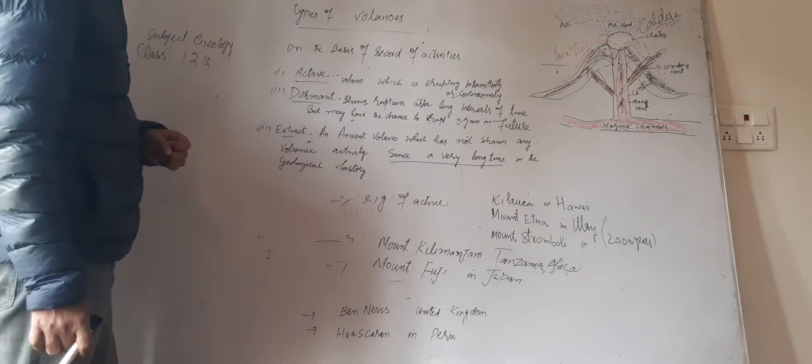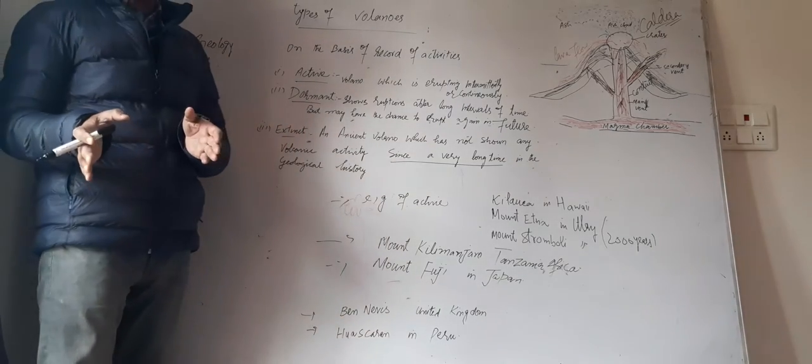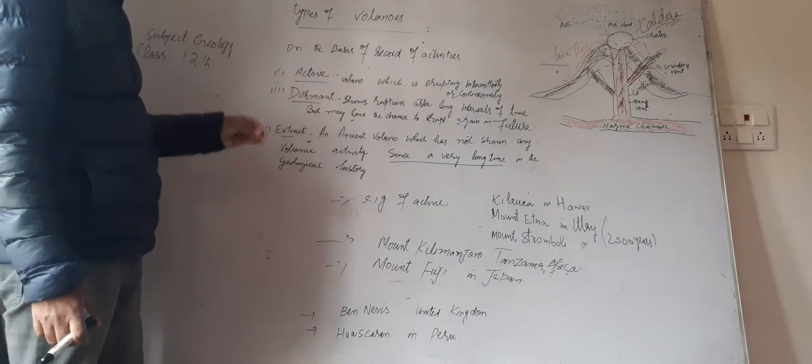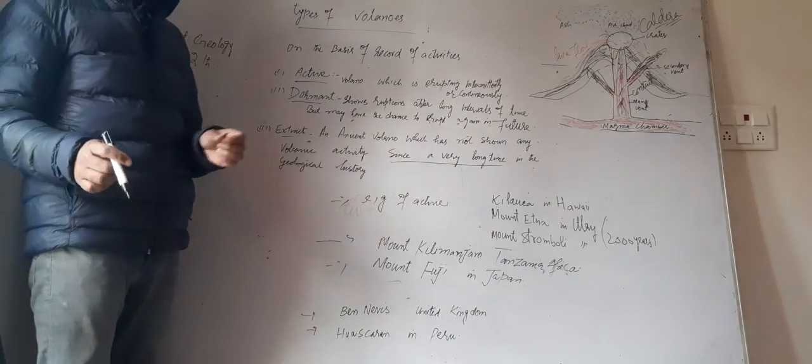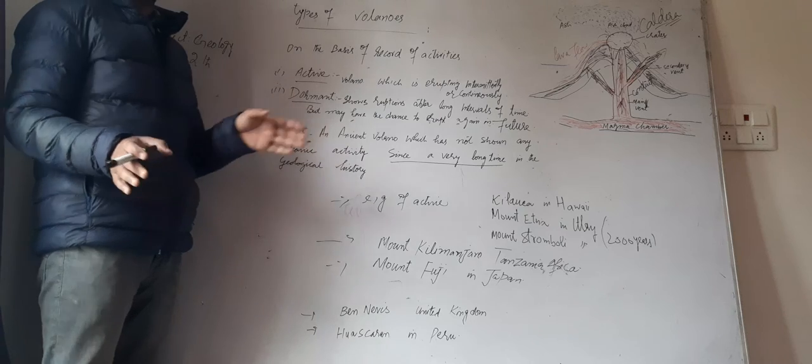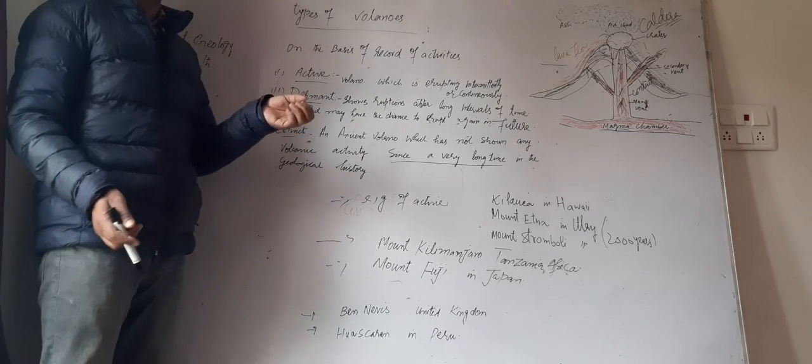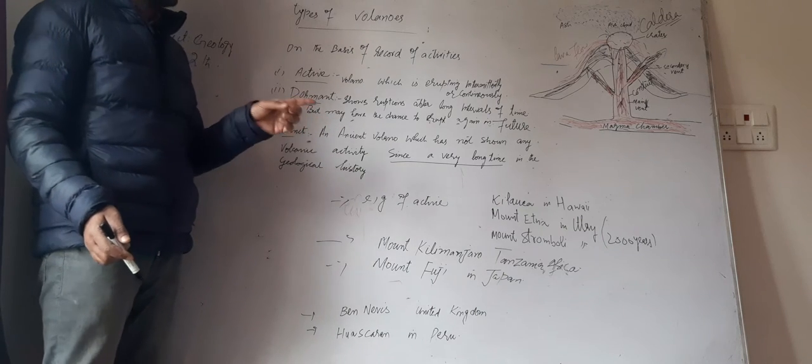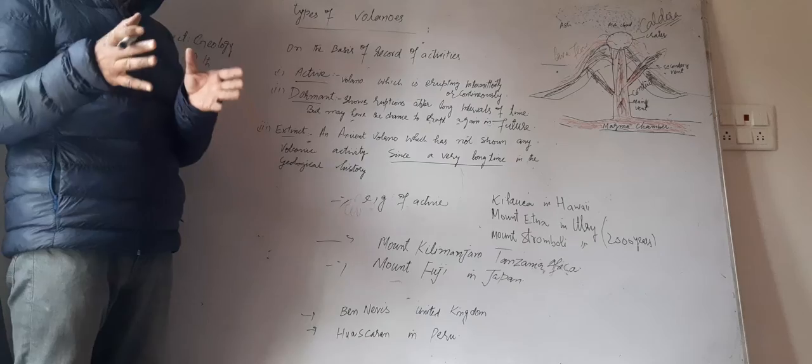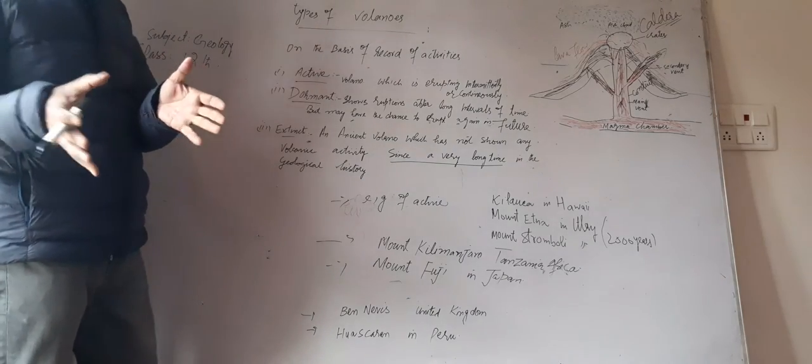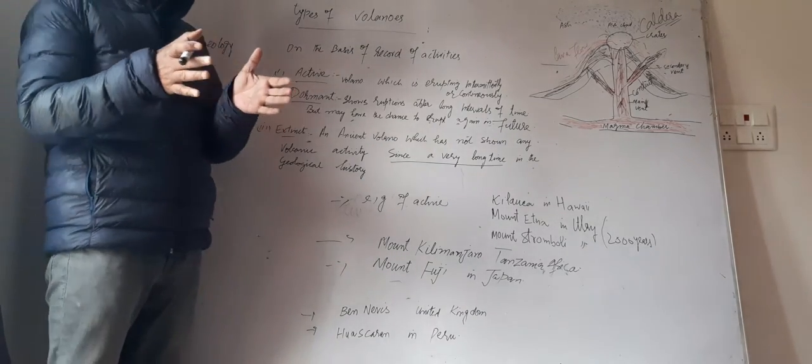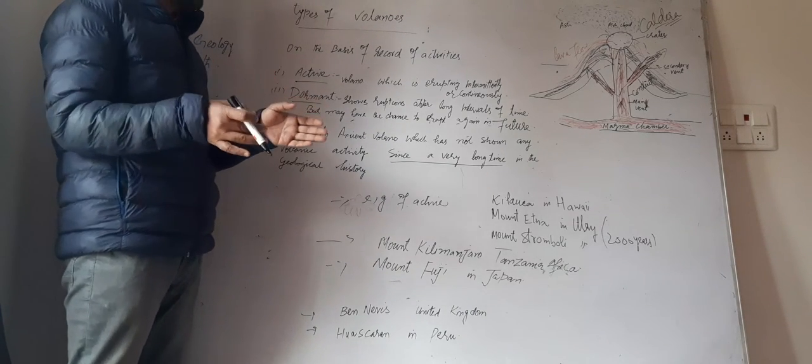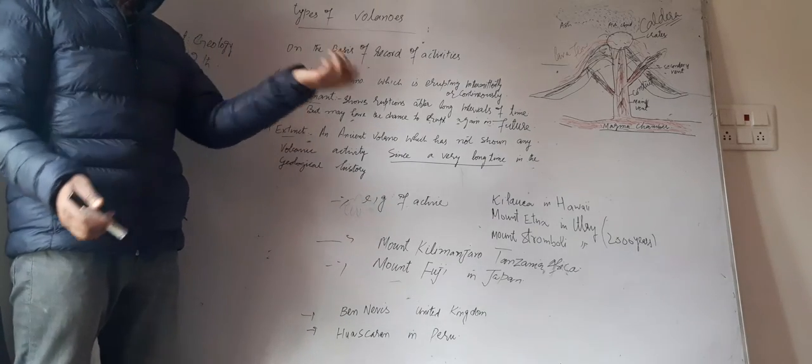The next one is dormant volcano. Dormant volcano shows eruption after a long period of time or long interval of time, but this dormant may have chances of eruption again in the future. So this is not continuous, but shows eruption one time and after a long period of time, it becomes silent. Then there are chances of eruption in future.